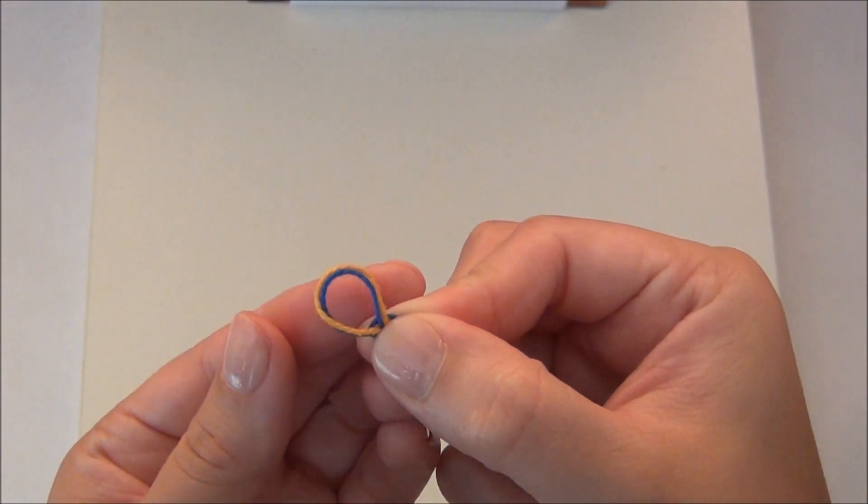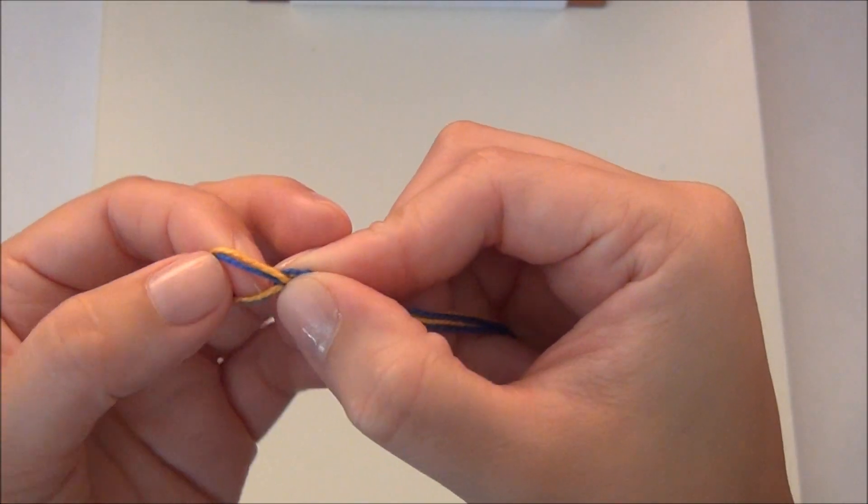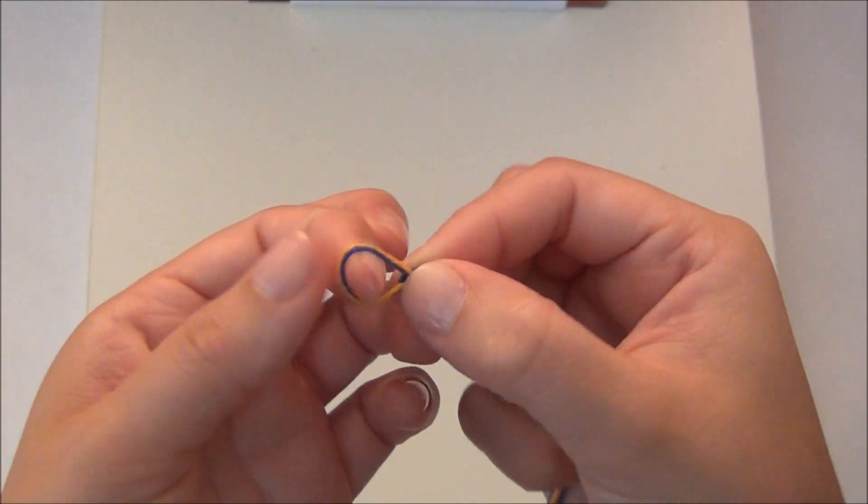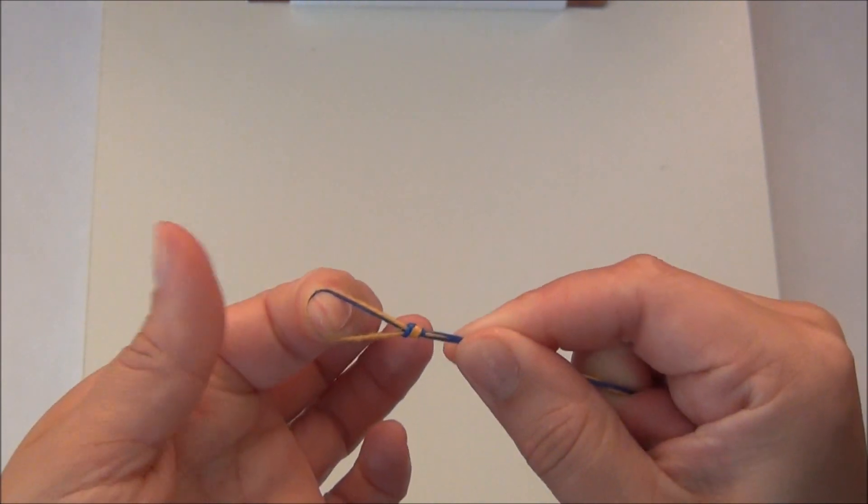You might want to secure your bracelet with a button at the end, or a bead or something, so make sure that that loop is going to be big enough to fit that button through, and then pull it tight.